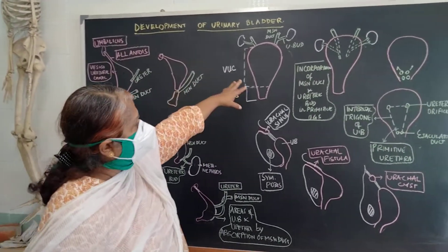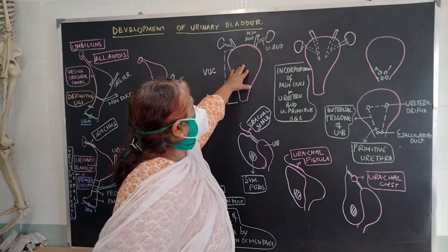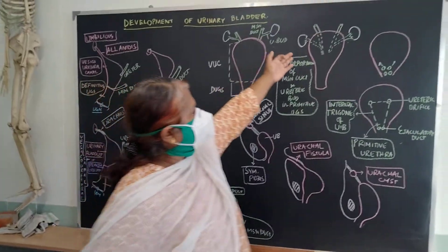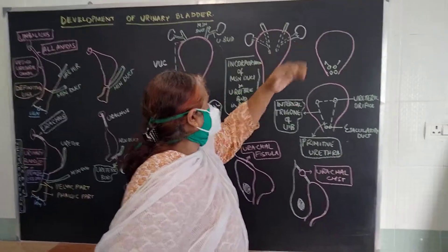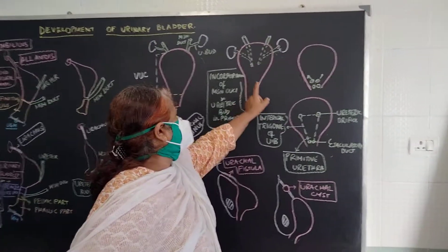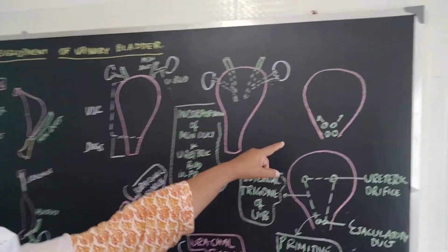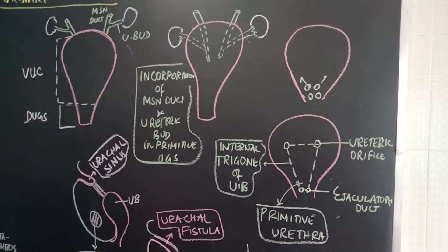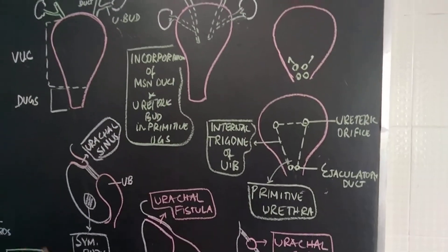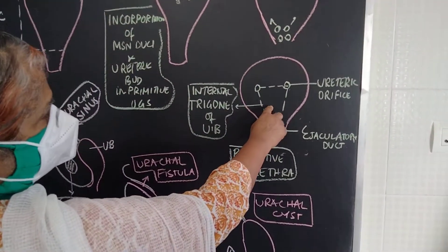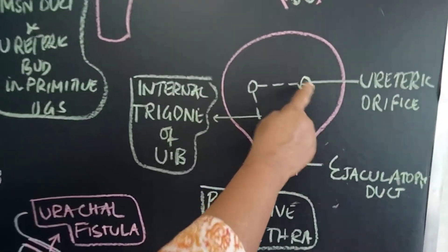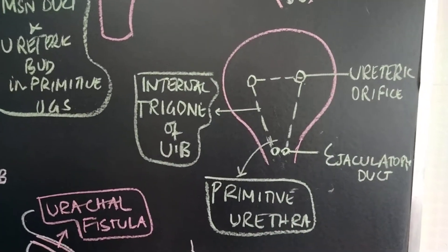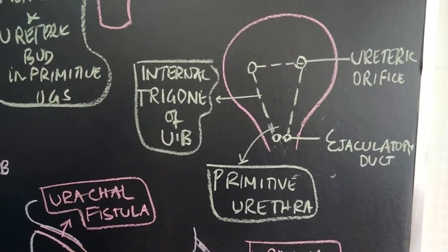Now let us see how these two openings occur. This is the ureteric bud and this is the mesonephric duct. This is the incorporation of the mesonephric duct and ureteric bud into the primitive urogenital sinus — these are the two openings. The ureteric bud and the mesonephric duct open on the internal surface of the urinary bladder. Now with the growth of the urinary bladder, the openings are being separated. This is the ureteric orifice, and the two orifices of the mesonephric duct are taken up in the case of males as the ejaculatory duct.